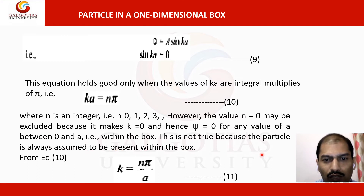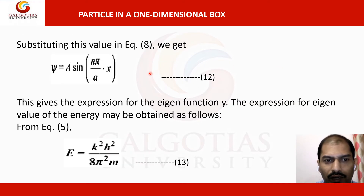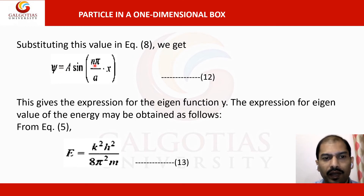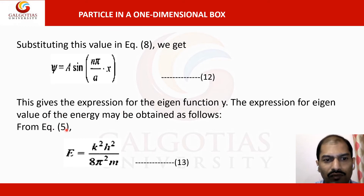Substituting k = nπ/a back into ψ = A sin(kx) gives the eigenfunction: ψ = A sin(nπx/a). This is the expression for the eigen function. The corresponding energy eigenvalue is obtained from the relation E = (k²h²)/(8π²m), which comes from the earlier definition k² = (8π²mE)/h².